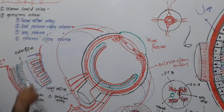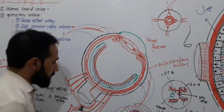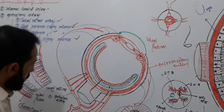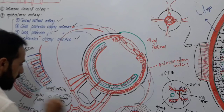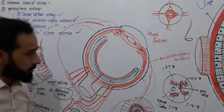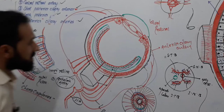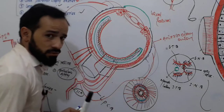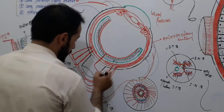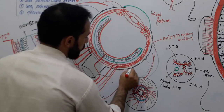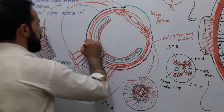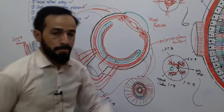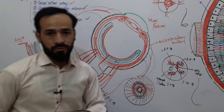So what did we learn? The arteries responsible for supplying the eyeball are: the central retinal artery, the short posterior ciliary artery, the long posterior ciliary artery, and the anterior ciliary artery — all branches of the ophthalmic artery, which itself is a branch of the internal carotid artery. This completes the oxygenated blood supply of the eyeball's inner structures. Remember that the lens and cornea are avascular. There are also episcleral arteries present. In the next lecture we will discuss the venous drainage of the eyeball.